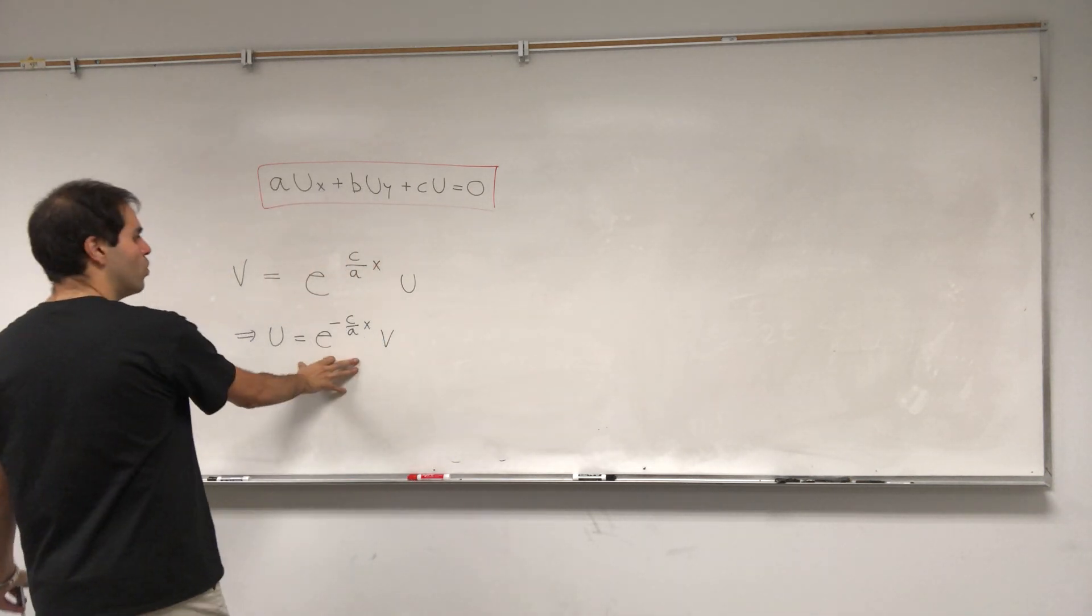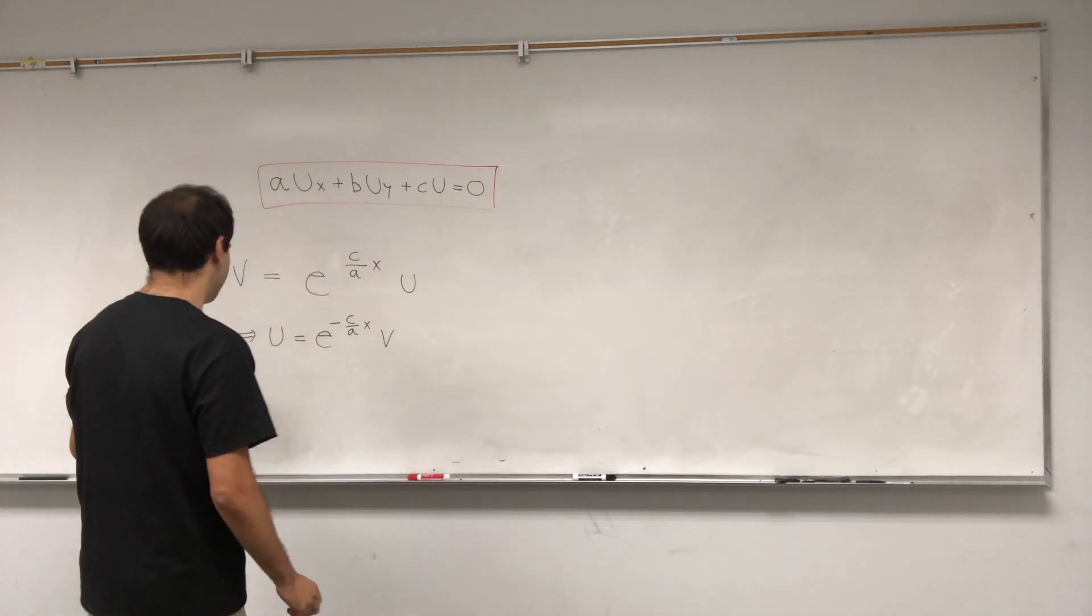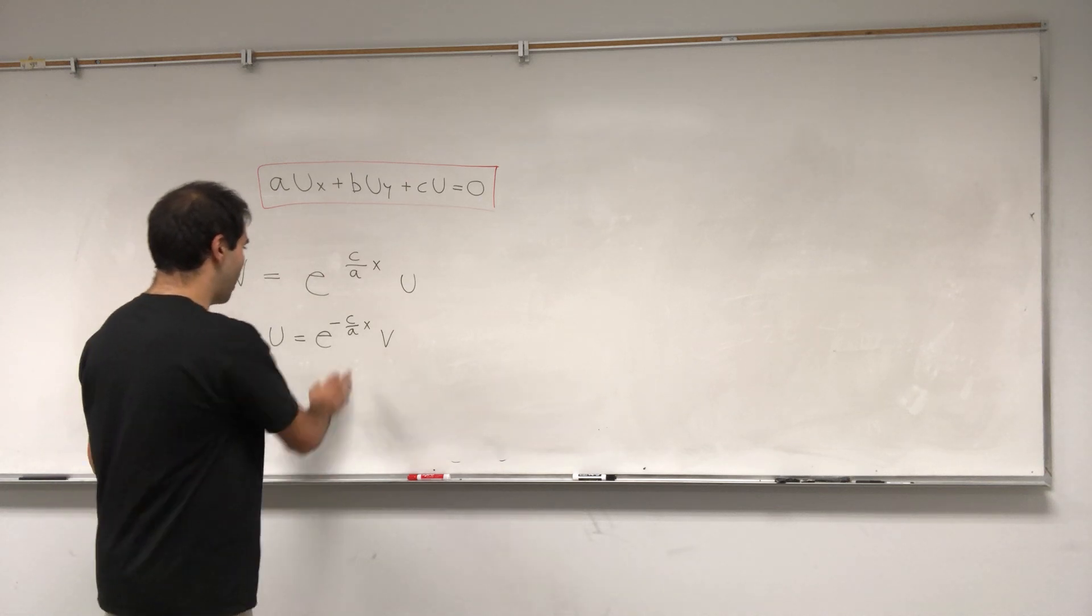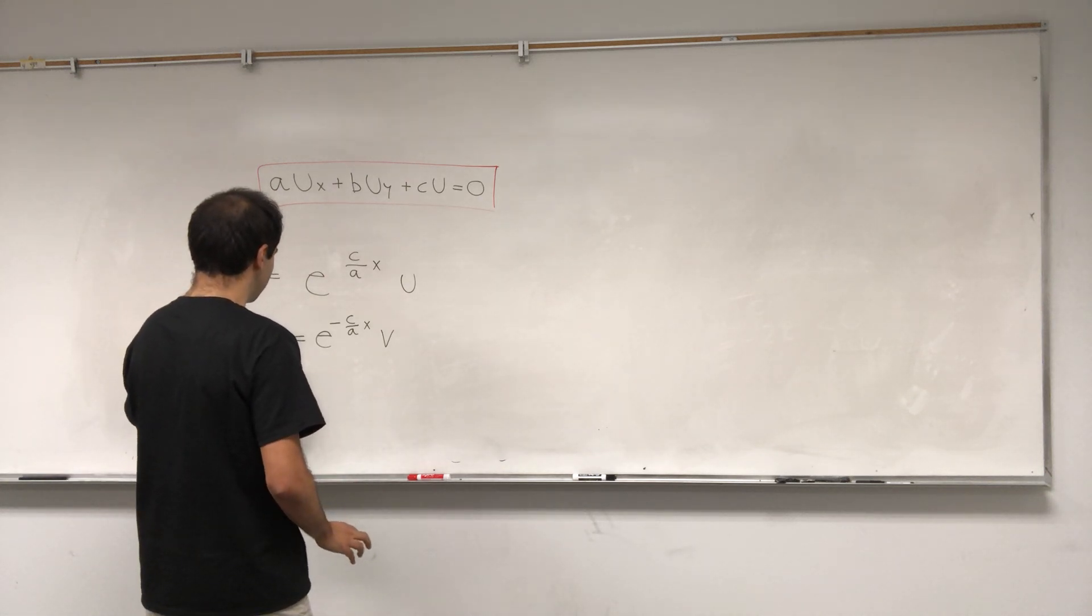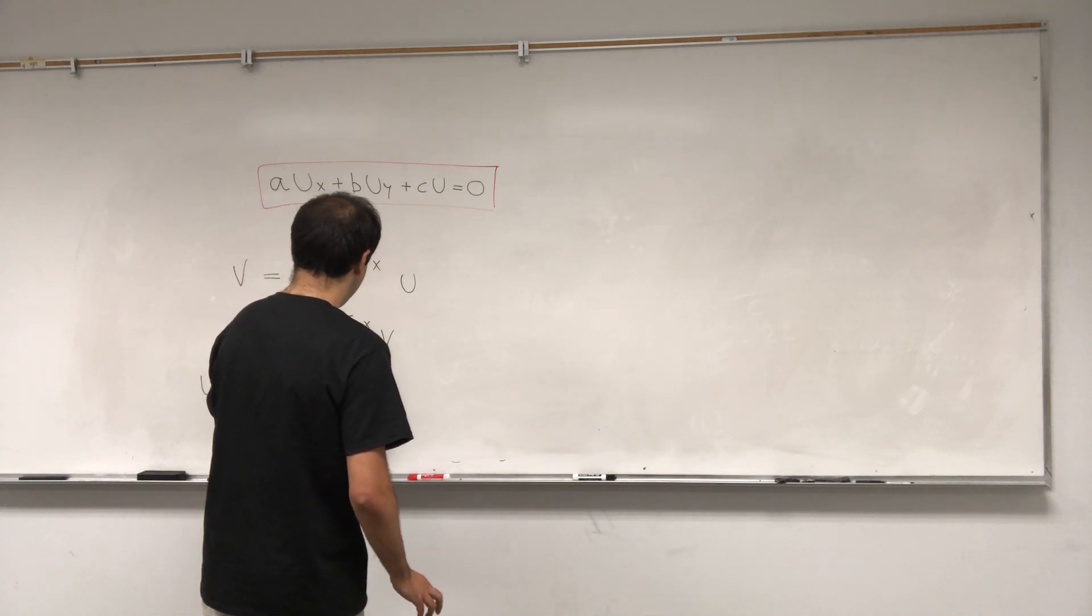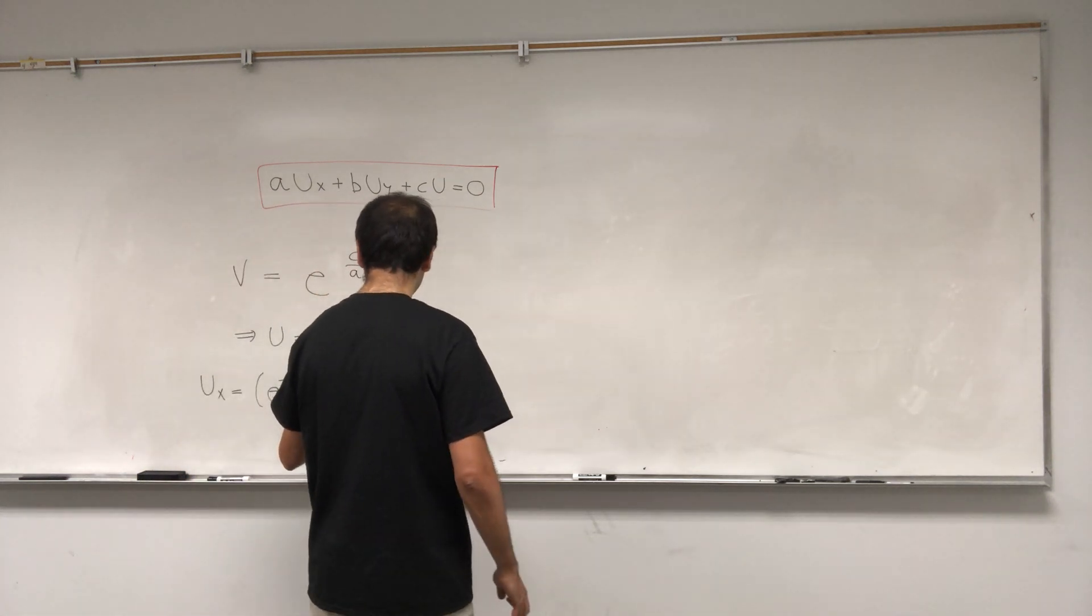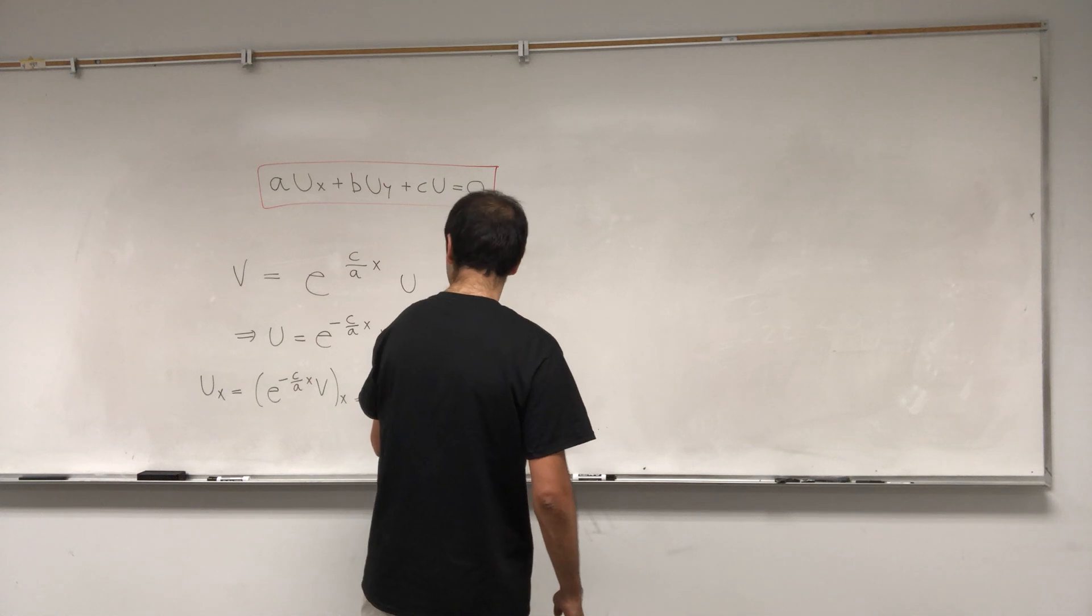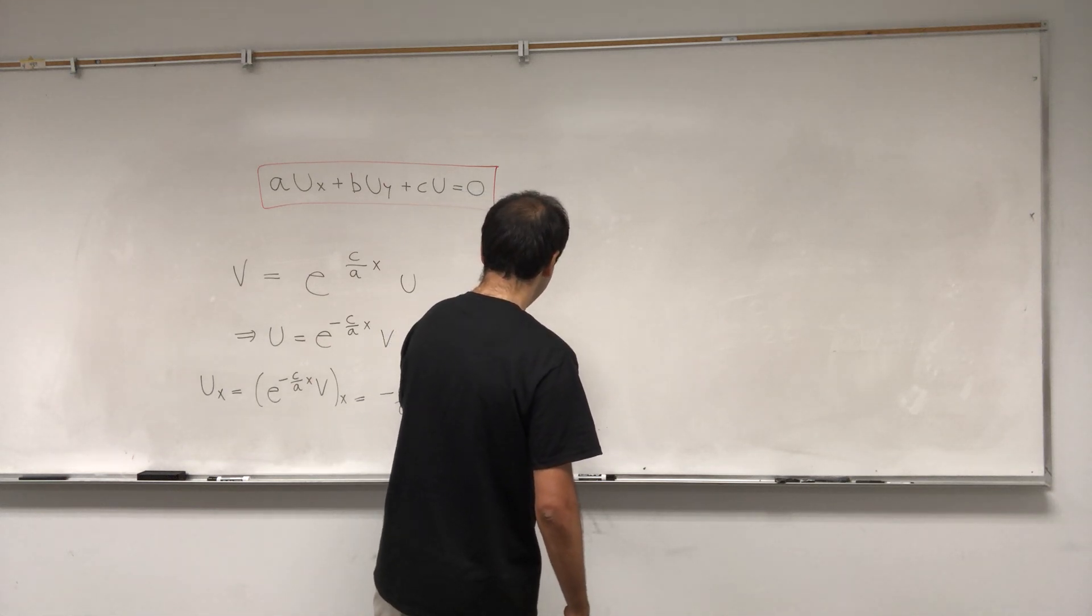And then what you want to do, you want to plug this into the PDE. So then let's calculate, first of all, UX. UX is the derivative of this with respect to X. And then now use the product rule. So minus C over A, E to the minus C over AXV plus E to the minus C over AXVX.